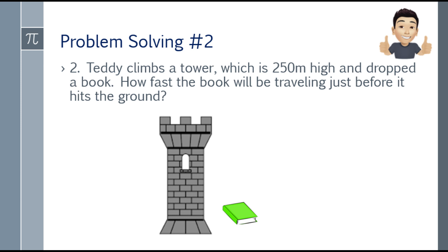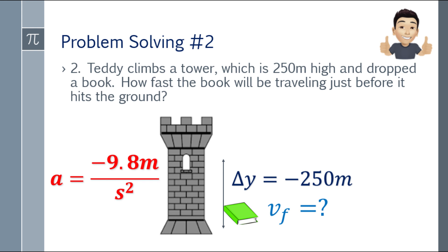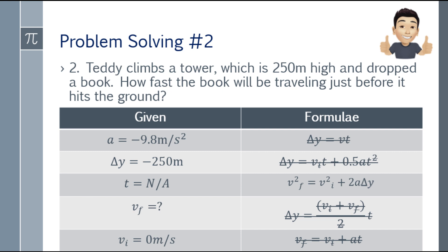Second problem: Teddy climbs a tower 250 meters high and drops a book. How fast will the book be traveling just before it hits the ground? Acceleration is negative 9.8 meters per second squared. Delta y is negative 250 meters — you're at the origin at the top of the tower. We're looking for the final velocity. Time is not applicable. Initial velocity is 0 meters per second — the keyword is 'drop.'